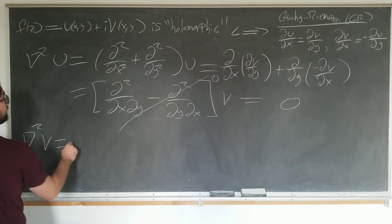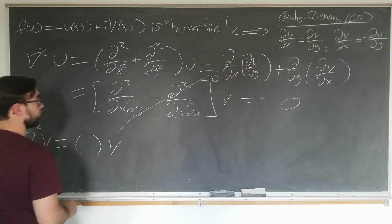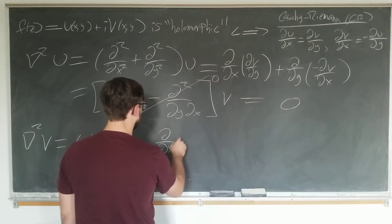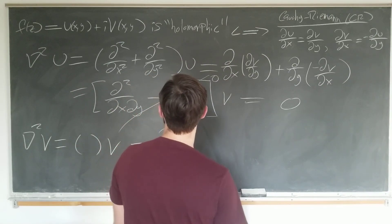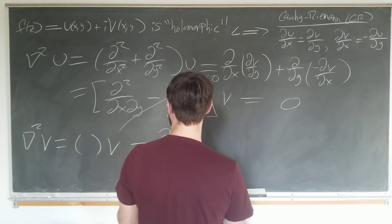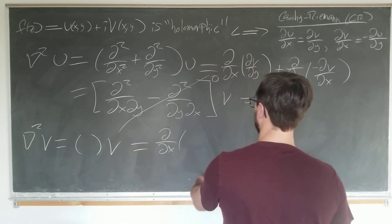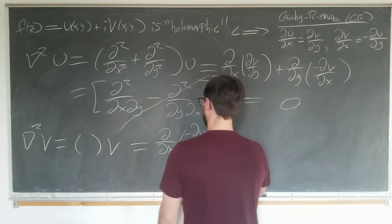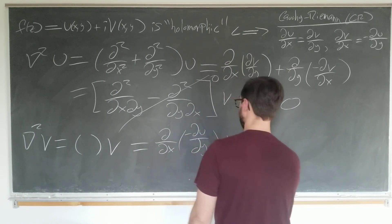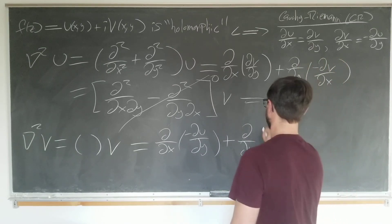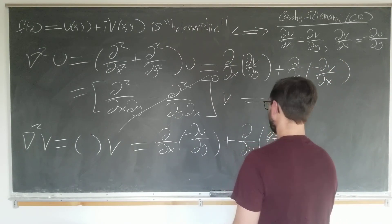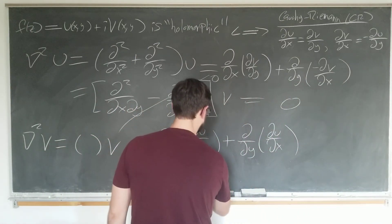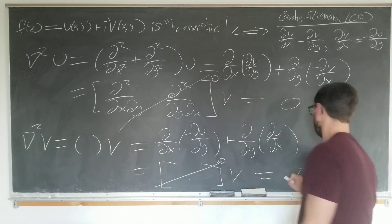Laplacian squared of v is exactly the same operator here, but u replaced by v, which is just going to be d by dx of dv by dx, which is minus du by dy, plus another term, the y-derivative of the y-derivative acting on v, which is just du by dx. And like before, we have the same differential operator here, which I'm going to denote by brackets, applied to v, which is zero, and it's zero.